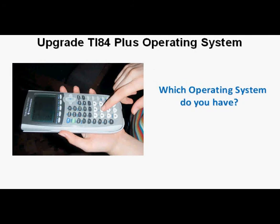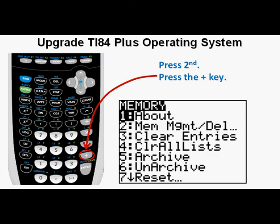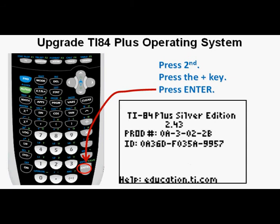To find out which OS you have on your calculator, press the second key at the upper left of the keypad, then press the plus key which gives the memory menu. Press enter. We can see that operating system 2.43 is installed. The updated version is 2.55MP — the MP stands for MathPrint.